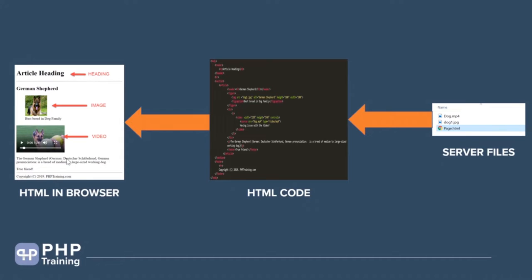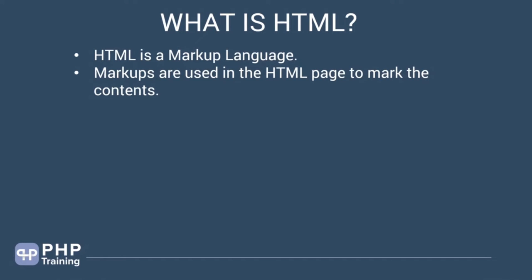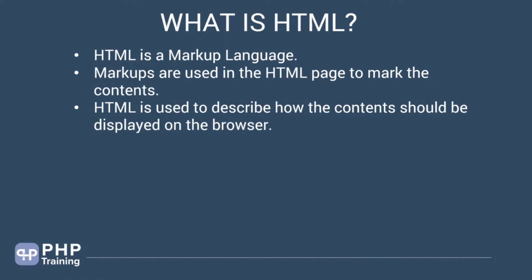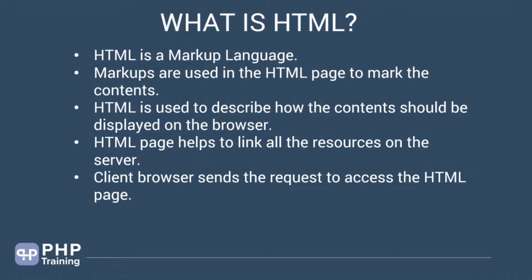Quick summary: HTML is a markup language. Markups are used to mark the content on the web page. HTML describes how content should be displayed on the browser — it's an instruction to the browser. One of the most powerful things about HTML is that it helps link all resources on the server. HTML can connect any publicly available resource on the internet, and the client browser sends a request to access the HTML page sitting at the server.